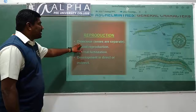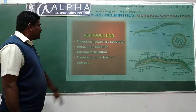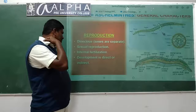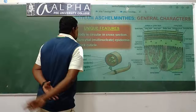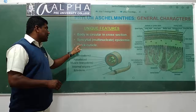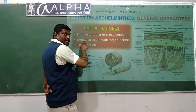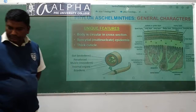Reproduction: sexes are separate. Sexual reproduction takes place by the copulatory process where male and female individuals come in contact. Internal fertilization. Development is direct in some - no larval stage - and indirect in some where they contain a larval stage. Unique features: the body is circular in cross section. Syncytial epidermis - that means multinucleated epidermis - is seen with a thick cuticle.